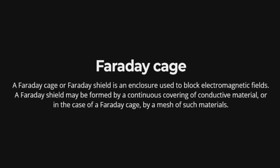A Faraday Cage or Faraday Shield is an enclosure used to block electromagnetic fields. A Faraday Shield may be formed by a continuous covering of conductive material, or in the case of a Faraday Cage, by a mesh of such materials.